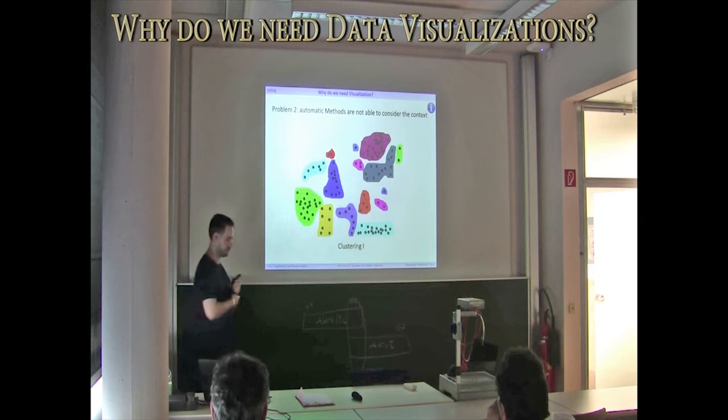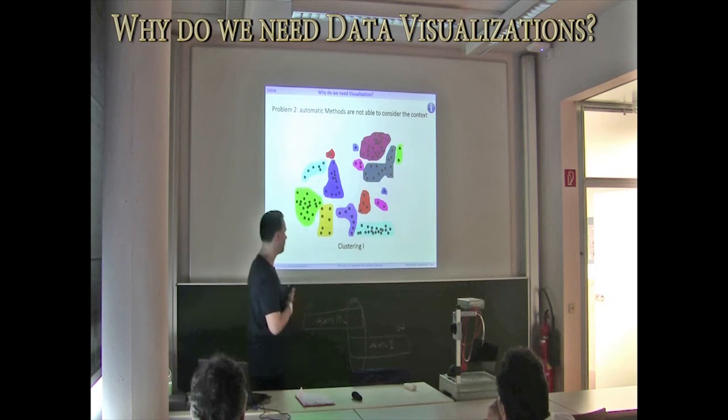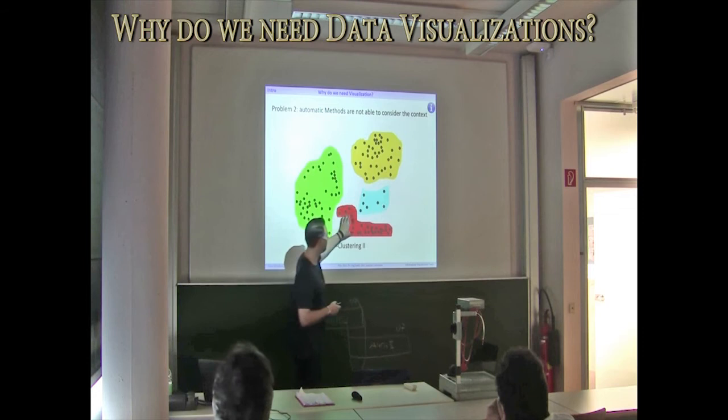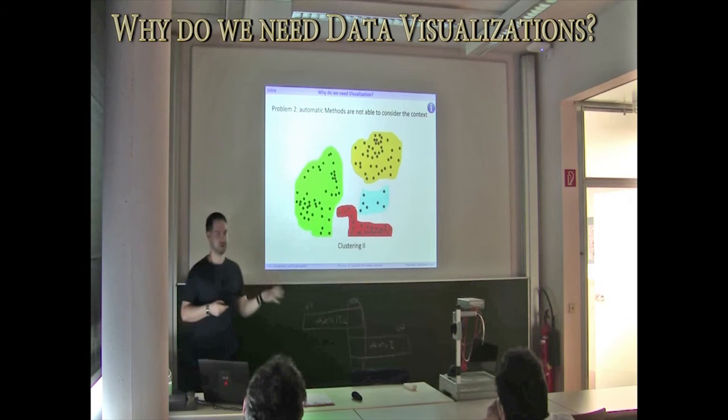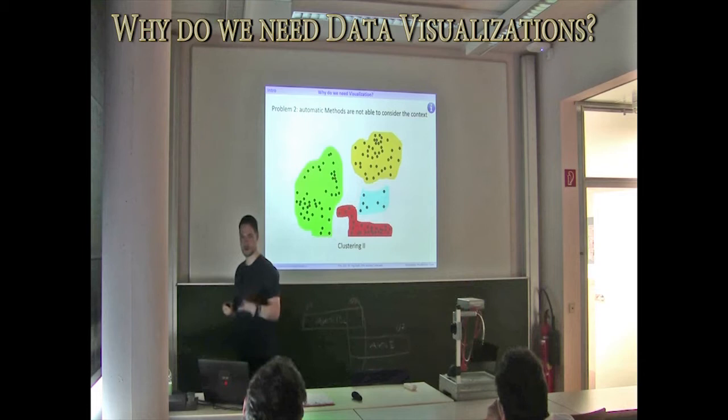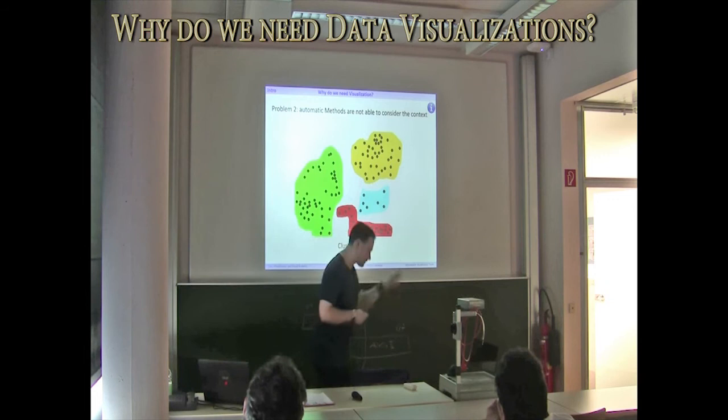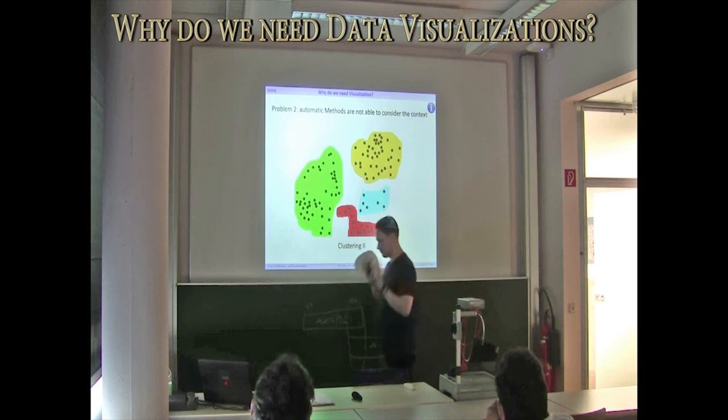Because clustering is not able to be aware of the context, you can apply a different clustering and get a different result. So the question is, which of these two clustering results is better for our domain? The automatic process is not able to decide. You need a human being to take a look at which makes more sense with respect to your domain.